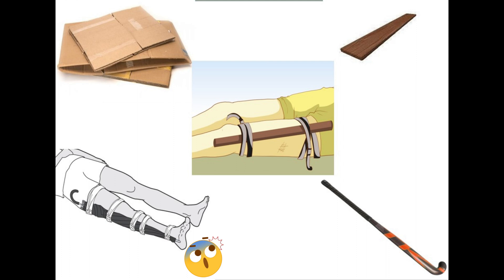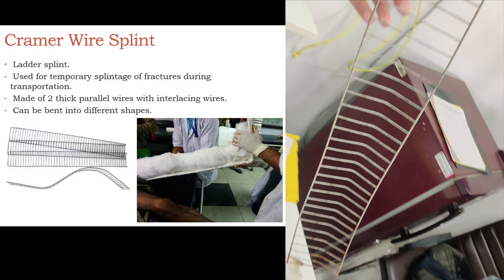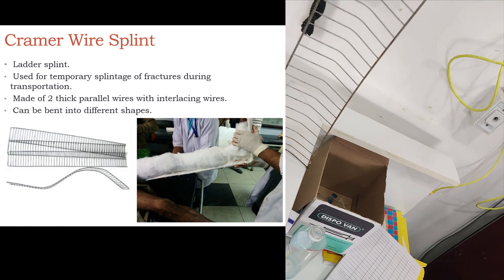A wooden stick can be used as a non-conventional splint. The importance of splinting in orthopedics is many. It helps in temporary immobilization of sprains, fractures, and reduced dislocations. It helps to reduce pain, facilitates patient transportation, prevents further soft tissue or neurovascular injuries, and decreases the risk of converting a minor into a major injury.